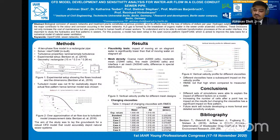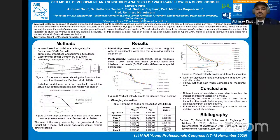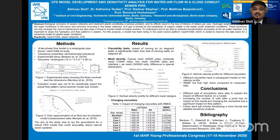In conclusion, different sets of simulations were able to explain the impact of different factors on the model. Increasing the number of cells after a certain point had no impact on results. Changing viscosities had a significant impact on flow pattern, although the root-mean-square error was not significant. Future work will include a more formal sensitivity report by combining different factors. This is just the groundwork for future work in my project, which concentrates on the mass transfer and transport of H2S and O2 gas in the sewer system. Validating the hydraulics initially will lay down better groundwork for future results.